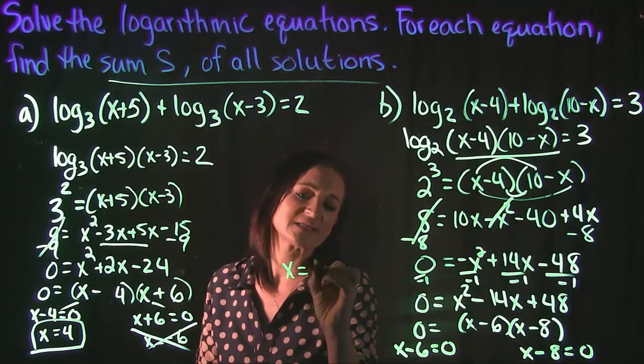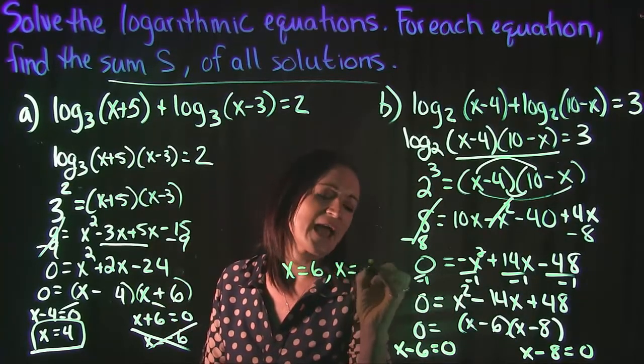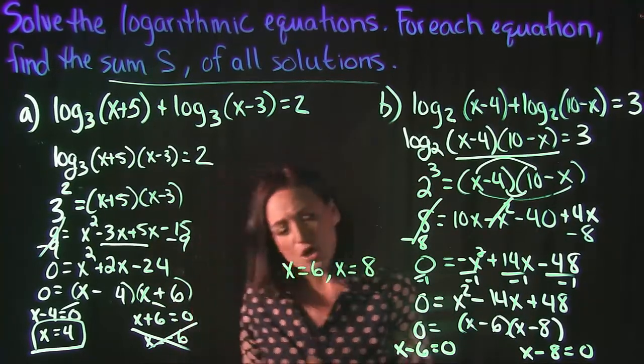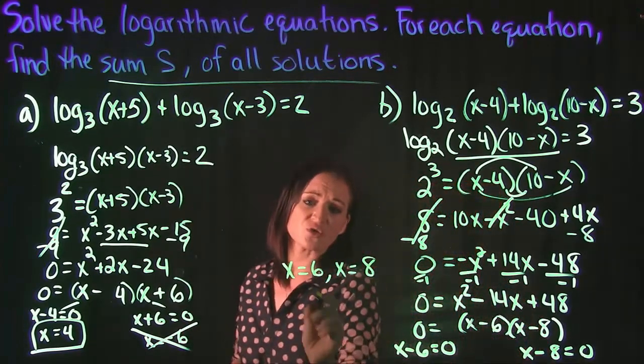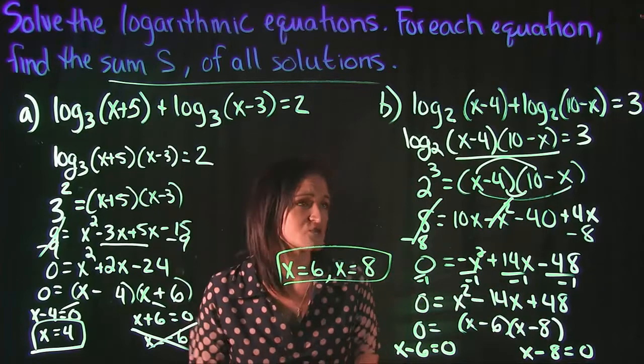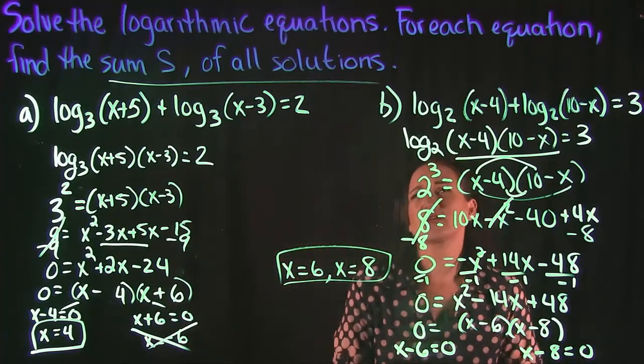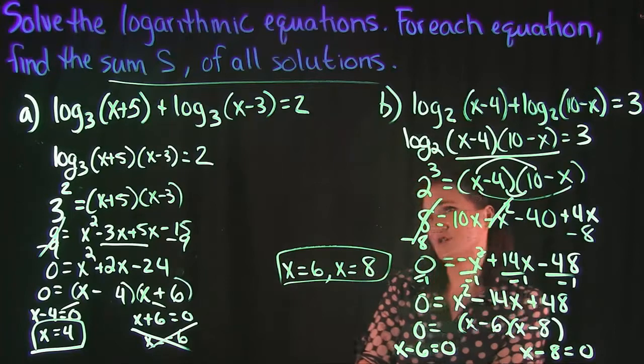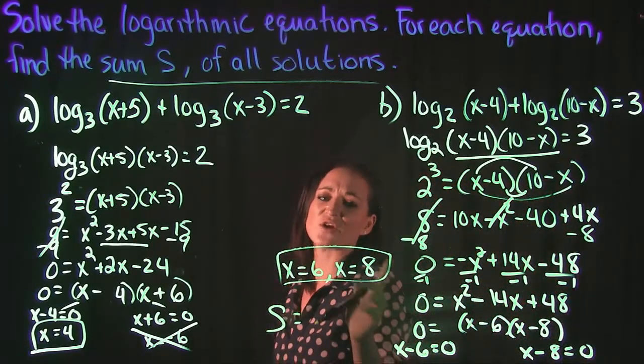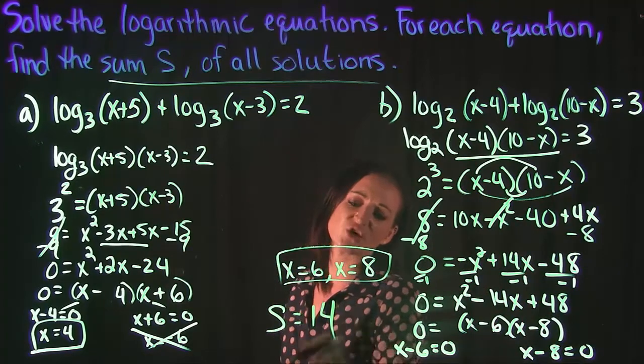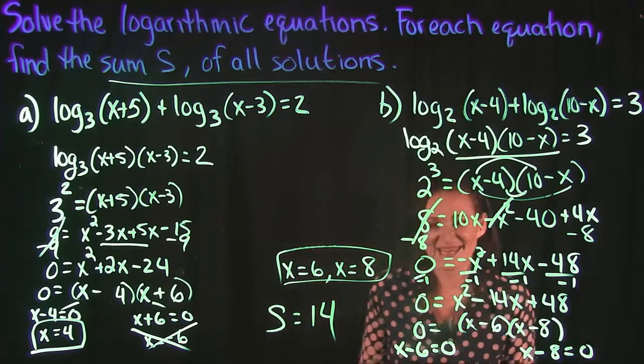We can use our zero factor property to split each one of our factors up, set them each equal to zero and solve. When we do that, we get x equals 6 and x equals 8. Both are positive, so everything is good there. Those are our two solutions. The question said find the sum of all solutions, so if we add these together, 6 plus 8 is a grand total of 14.